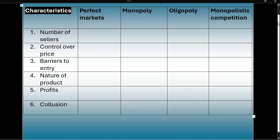Welcome to Market Structures. We have four market structures that we're going to compare here, and we will use the six characteristics on the left to compare these market structures. Let's start by giving an example. What would be an example of a perfect market? A street vendor is a good one.